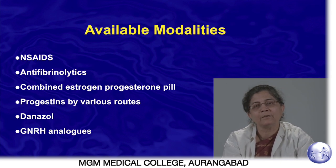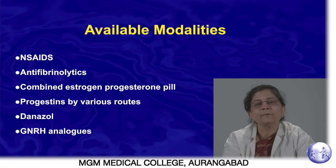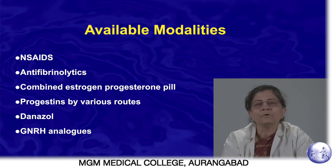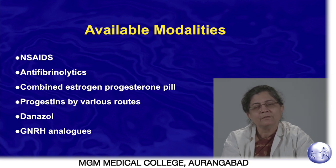Modalities available in medical management: non-hormonal options include NSAIDs, which act as anti-prostaglandins and may correct the prostaglandin balance, and anti-fibrinolytics, which correct excessive fibrinolysis and control bleeding. Hormonal options include combined oral contraceptive pills containing estrogen and progesterone, progesterone-only preparations in oral, injectable, local, or implant forms, and other drugs like danazol or GnRH analogues.